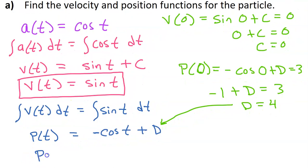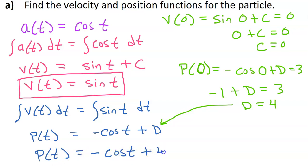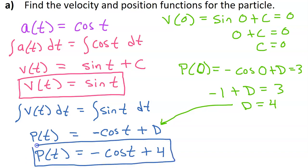Substituting that back in, we will have our position function: p at t is equal to negative cosine t plus 4. So we found a velocity function here in red and a position function here in blue — those were the two things we were asked to find.